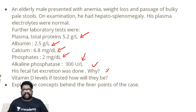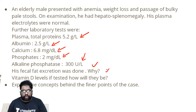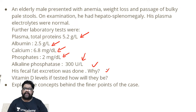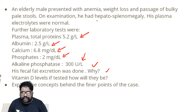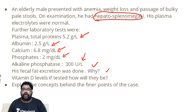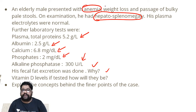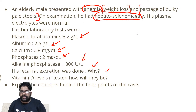Take this as a real-time condition. If an elderly male has reported to your OPD or emergency department, how would you approach it? The physical examination is showing hepatosplenomegaly. Also the patient is presenting with anemia, exhibiting weight loss, and there is passage of bulky pale stools. Here we can begin with one single point.